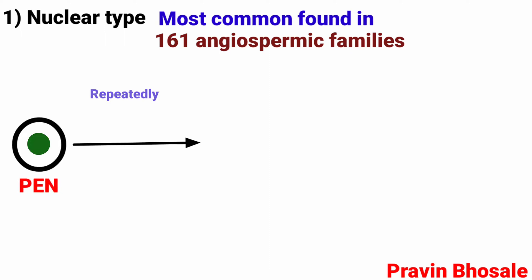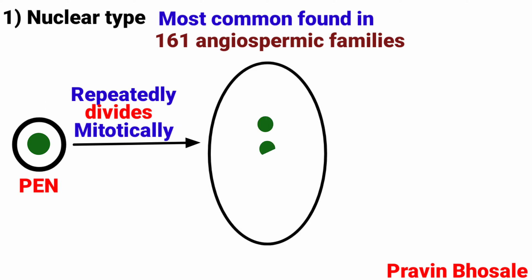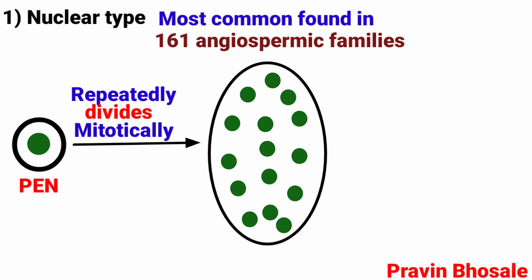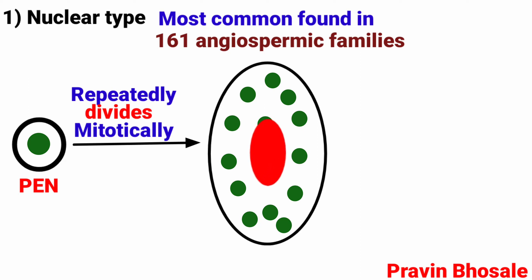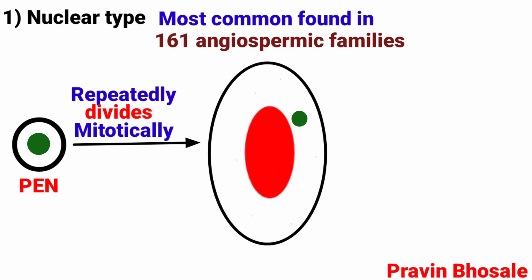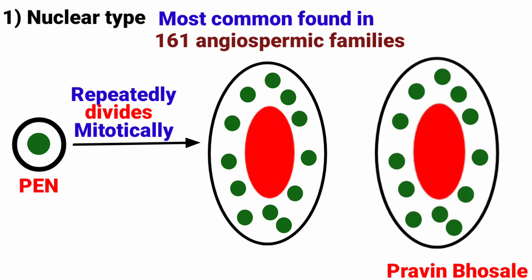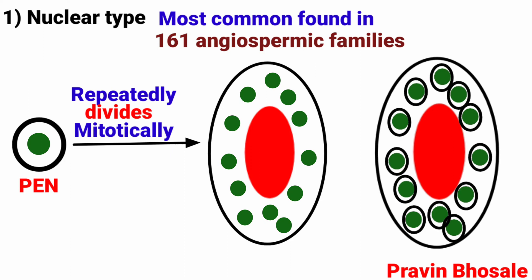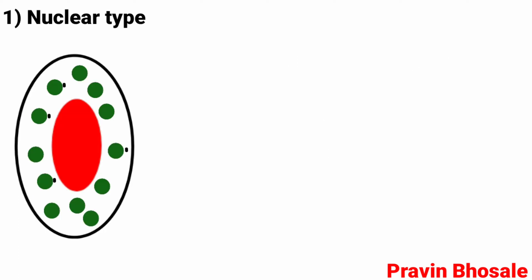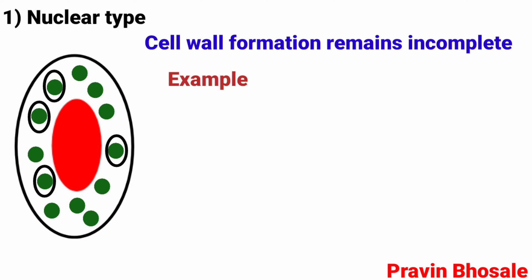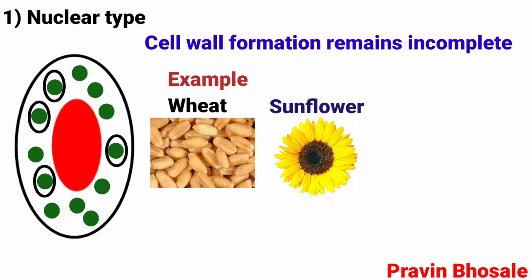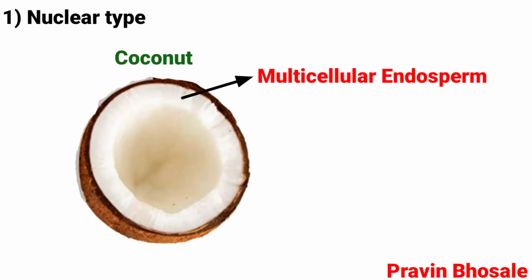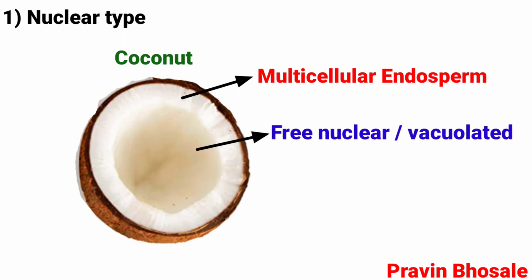In nuclear type, the primary endosperm nucleus rapidly divides mitotically without wall formation to produce a large number of free nuclei. A big central vacuole appears in the center of the cell, pushing the nuclei towards the periphery. Later, walls develop between the nuclei and multicellular endosperm is formed. In several cases, cell wall formation remains incomplete — examples include wheat, sunflower, and coconut. Coconut has multicellular endosperm in the outer part and free nuclear as well as vacuolated endosperm in the center.